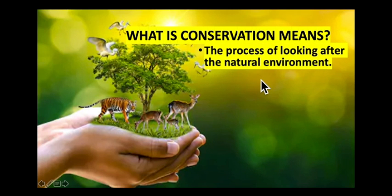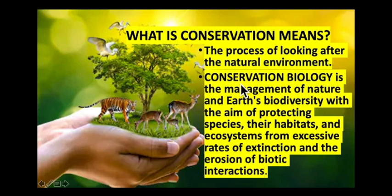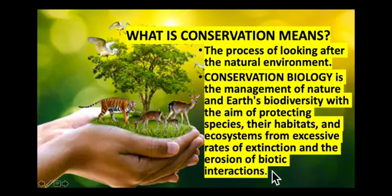The process of looking after the natural environment is called conservation. Specifically in biology, conservation is the management of nature and Earth's biodiversity with the aim of protecting species, their habitats, and ecosystems from excessive rates of extinction and the erosion of biotic interactions. Conservation attempts to maintain or increase the range of different species living in an area - that is called biodiversity.